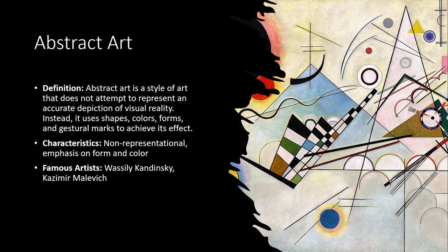First of all, abstract art. Abstract art is a style of art that does not attempt to represent an accurate depiction of visual reality. Instead, it uses shapes, colors, forms, and gestural marks to achieve its effect. The main characteristic is it's non-representational — there's use of forms and color, but we're not painting a picture of a beautiful valley. There's no particular pattern, but all these forms and shapes come together to achieve something quite stirring. This is a painting to your right.